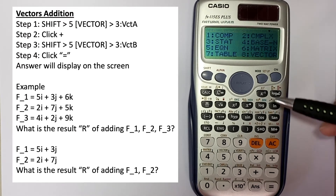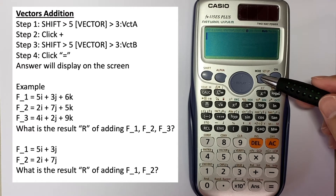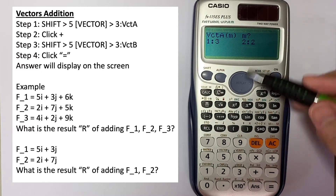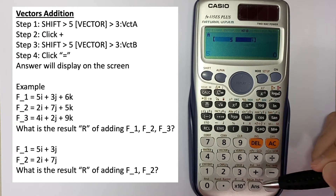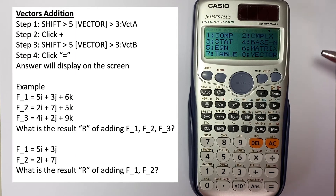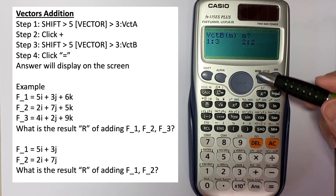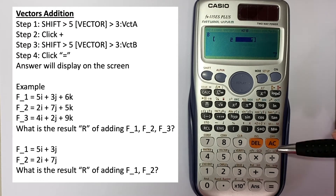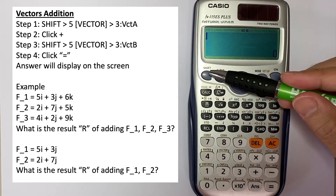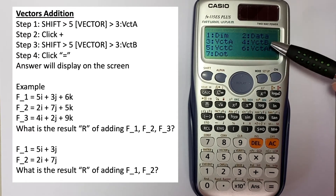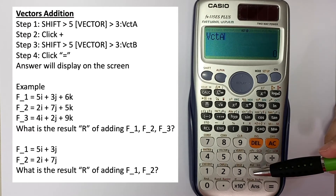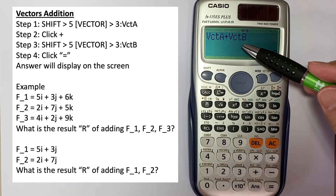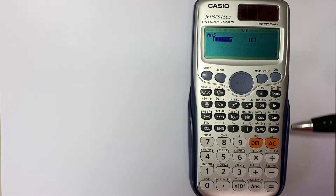For two-unit ij vector addition, clear the previously stored vectors. Go to Mode A, select vector A with two dimensions, and enter 5 and 3. Save it. Repeat for vector B: select number 2 for two-unit vector and enter 2 and 7. Save it. Then go to Shift 5, select vector A (number 3), press plus, then Shift 5 and select vector B (number 4). The result of vector A plus vector B is 7 and 10.